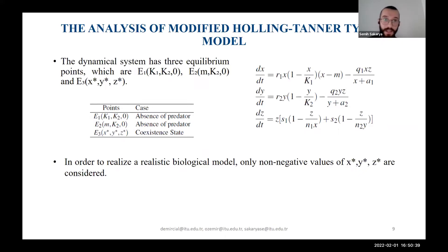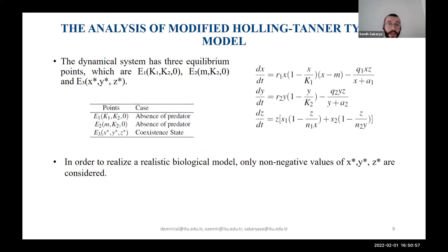We can continue with the stability analysis of the model. In this dynamical system we have three different equilibrium points. At E1 and E2 there is no predator species, while at E3 we can observe a coexistence state of all three species. In order to realize a realistic biological model, we only consider the non-negative values of E3.